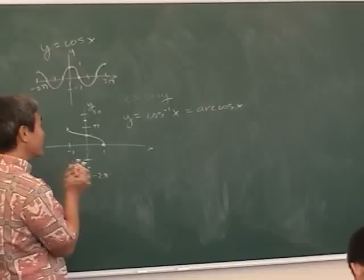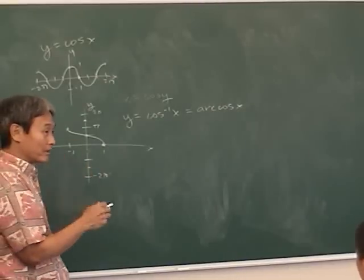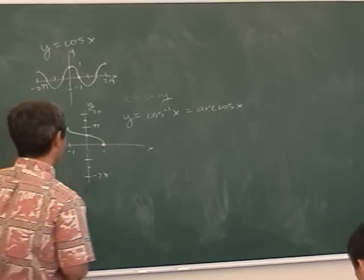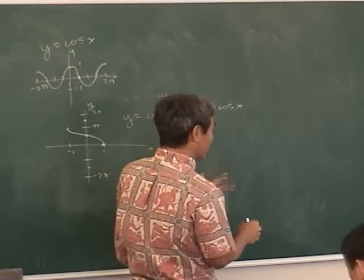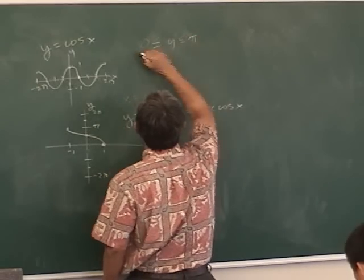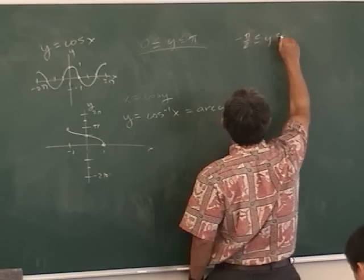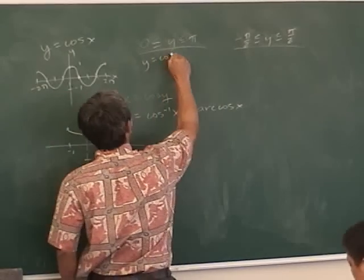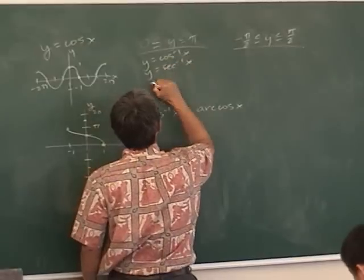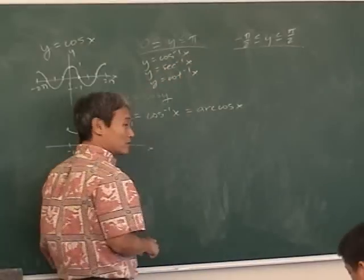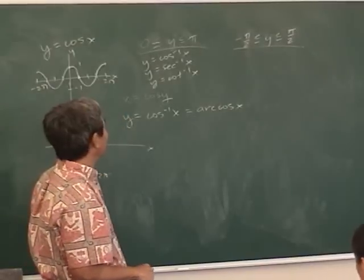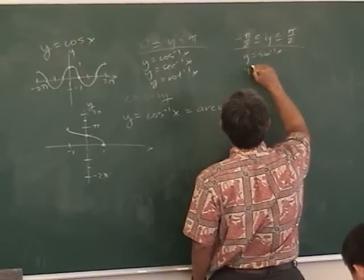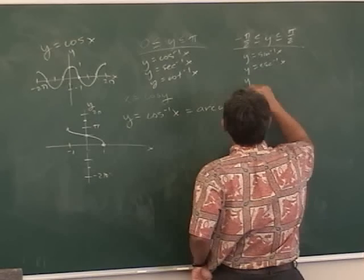The key to doing inverse trig functions is you've got to remember the restricted range. Luckily there are only two restricted ranges. The first one is between zero and pi, and the other one is between negative pi over two and pi over two. For the zero-to-pi range: cosine inverse, secant inverse, and cotangent inverse. For the negative-pi-over-two to pi-over-two range: sine inverse, cosecant inverse, and tangent inverse.